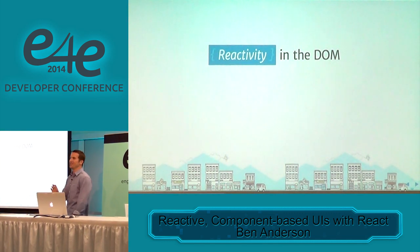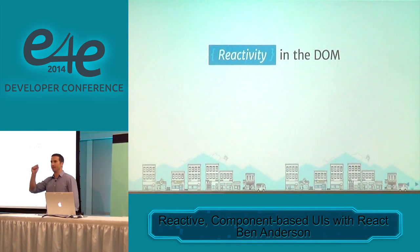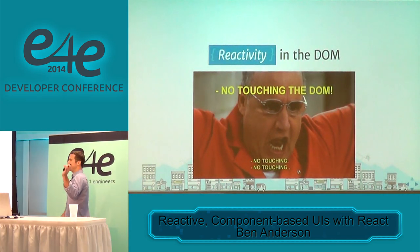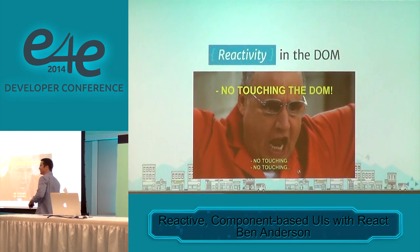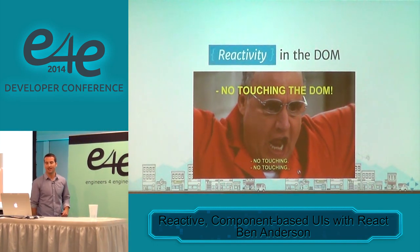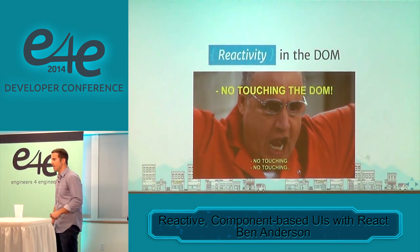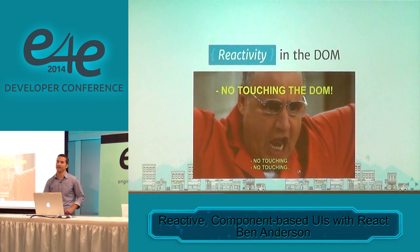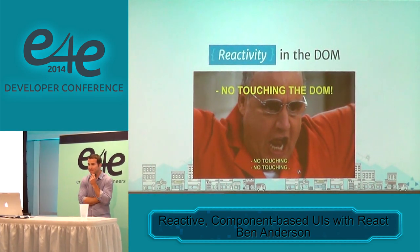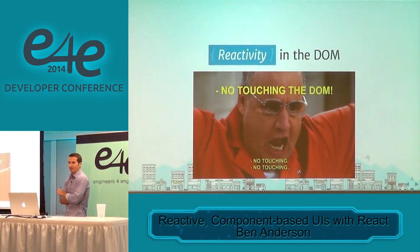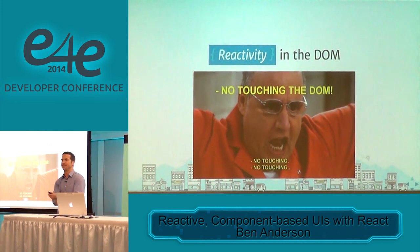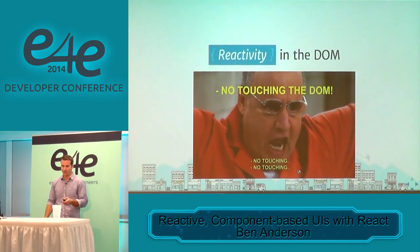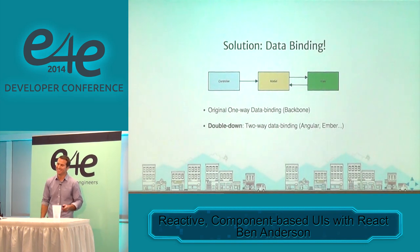React doesn't try to solve the problem of syncing your server data with your models on the client — it assumes we've already got pretty good ways of doing that. What we're concerned about is taking our models and serializing them into the DOM in a reliable way. The key principle here is: no touching the DOM. When we react to events and get into weird states after eight actions, it's because we're touching the DOM in an imperative way, and it just does not scale over time.